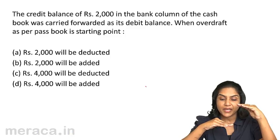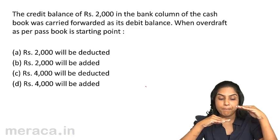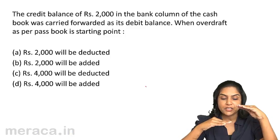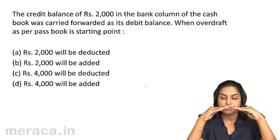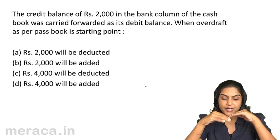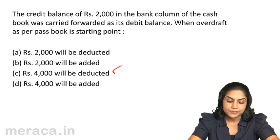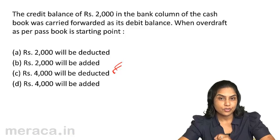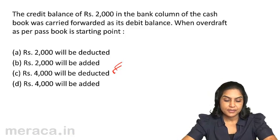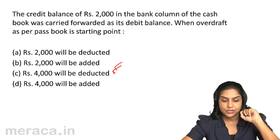So if you start from the cash book to arrive at the pass book, you would deduct. However, we are starting from the pass book. Therefore, from pass book to cash book we would ordinarily add. Since it is an overdraft, we would deduct. Please note that in this case the amount involved is not 2000 — it is 4000.